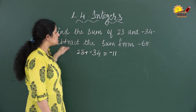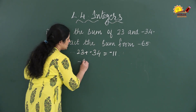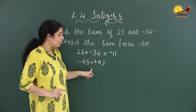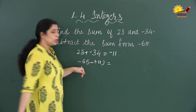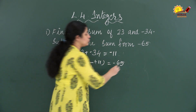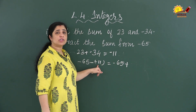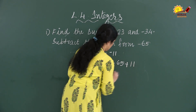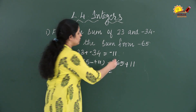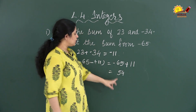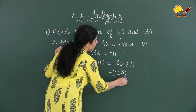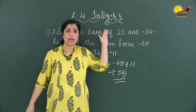Now subtract this sum from minus 65: minus 65 minus minus 11. Apply the subtraction rule — keep minus 65 as is, change subtraction to addition, and write the additive inverse of negative 11, which is positive 11. Now one number is negative and one is positive, so subtract: 65 minus 11 equals 54. Keep the sign of the bigger number, which is negative, so the answer is minus 54.